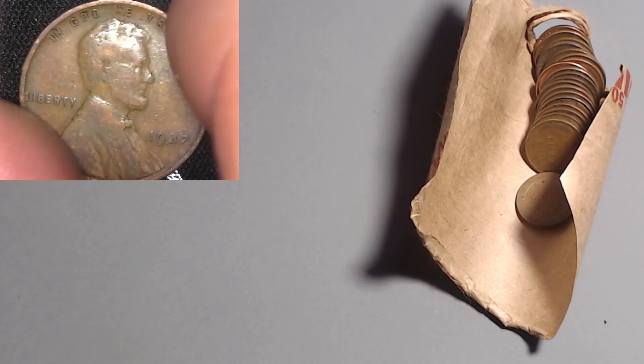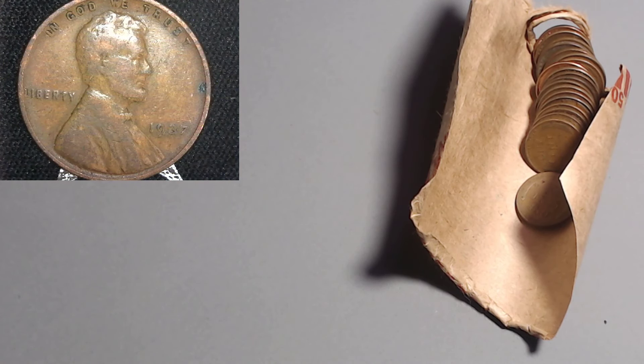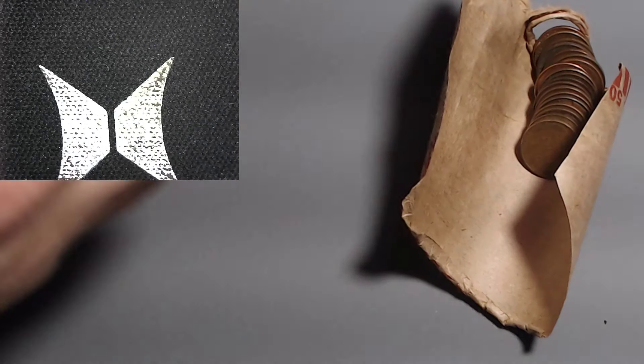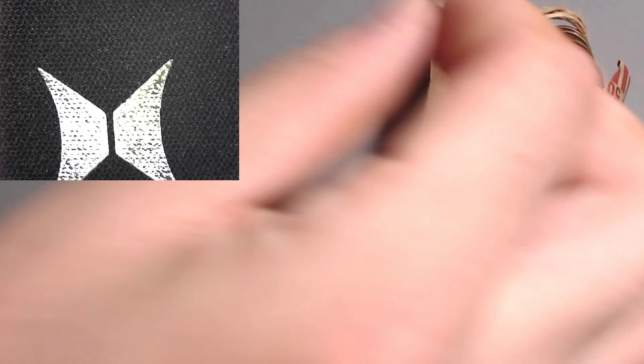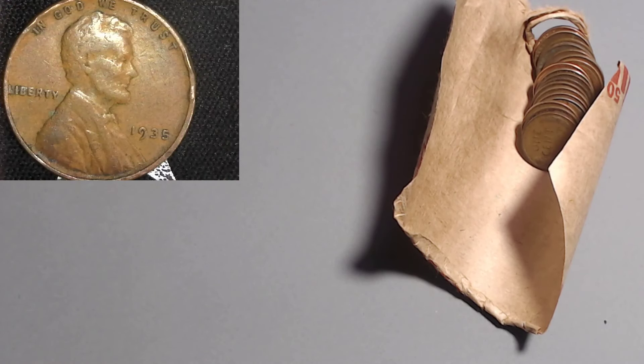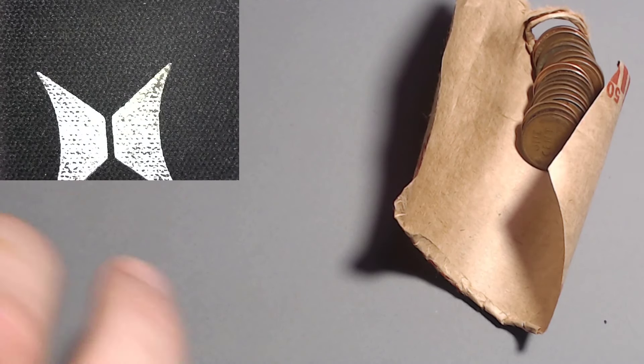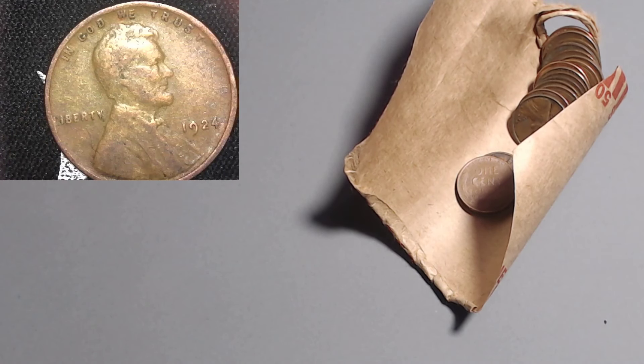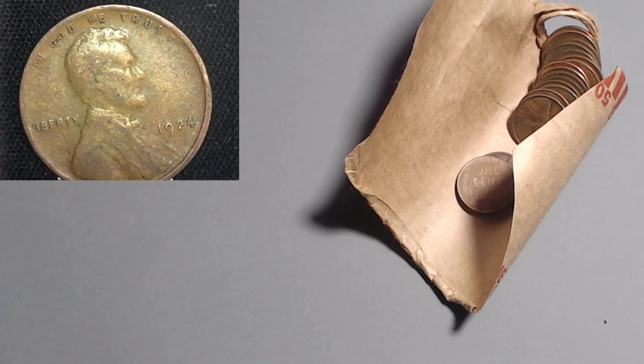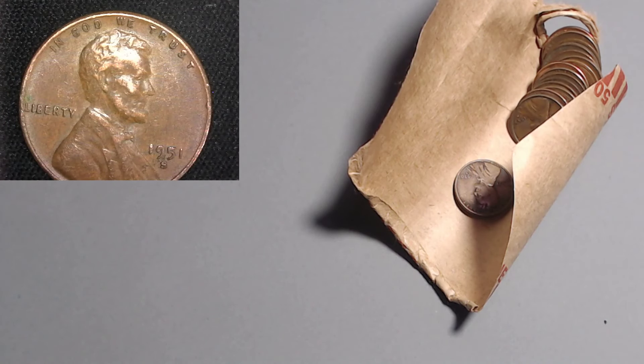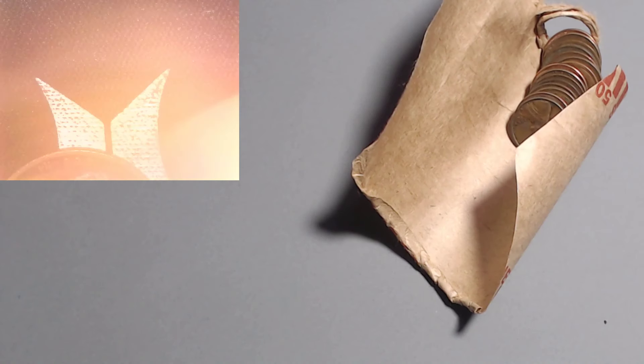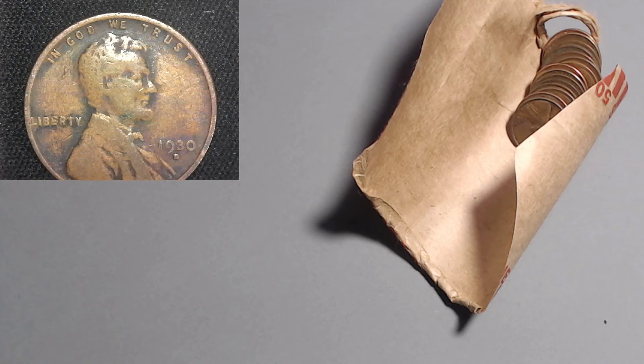And next is a 1937 out of Philadelphia. 1937 Philly with 309 million. And coming up is the 1950 San Francisco. 1950 S, 118 million. Come on key dates. We got a 1935 Philadelphia with 245 million. That's not really what I asked for. Roll, don't let me down in the last half. The 1924 Philadelphia with 75 million. And now we got the 1951 out of San Francisco with 136 million. 1930 out of Denver, 40 million. That's what I'm talking about. 1930 Denver.